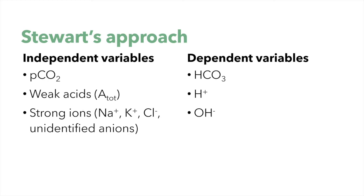With the Stewart approach, variables are divided into dependent and independent. While bicarbonate, hydrogen, and hydroxide are dependent variables, pCO2, weak acids, and strong ions are independent variables — and are the primary responsible factors for acid-base alterations. Weak acids are principally plasma proteins, indicated as A-tot.